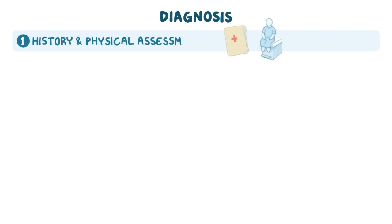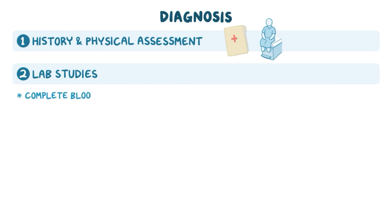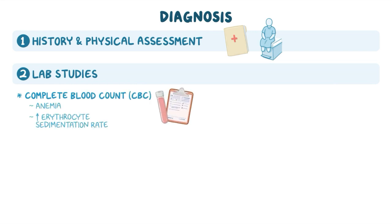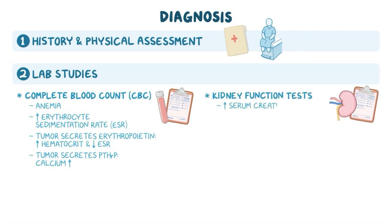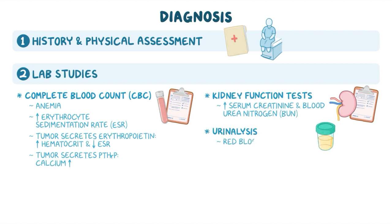The diagnosis of renal cancer starts with the client's history and physical assessment. Laboratory studies include a complete blood count (CBC), which may show anemia and increased erythrocyte sedimentation rate (ESR). When the tumor secretes erythropoietin, clients can have an increased hematocrit and low ESR. If the tumor secretes PTHRP, calcium levels are also elevated. Kidney function tests can show elevated serum creatinine and blood urea nitrogen (BUN). Urinalysis is typically also performed to look for red blood cells in the urine.